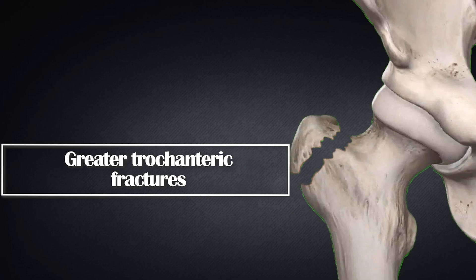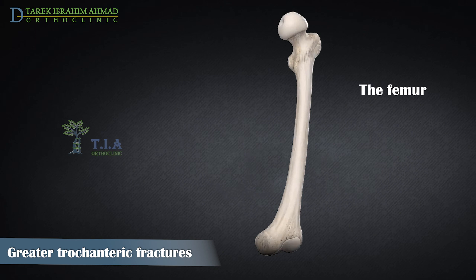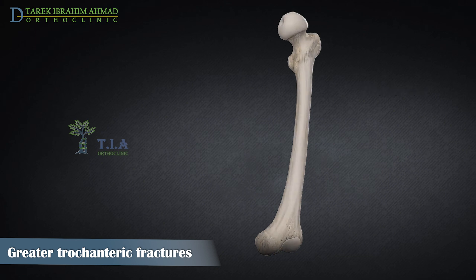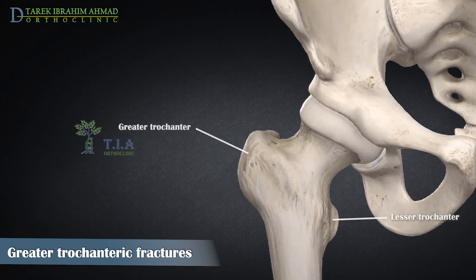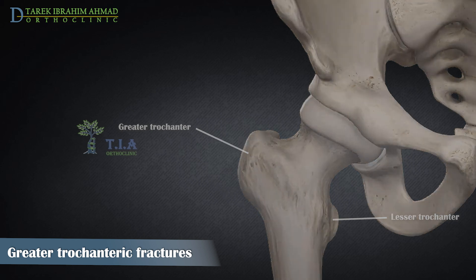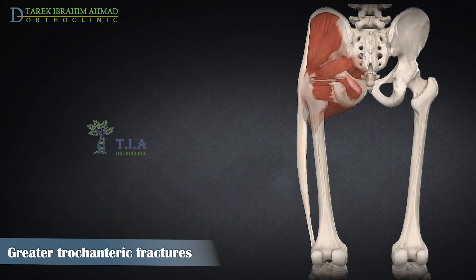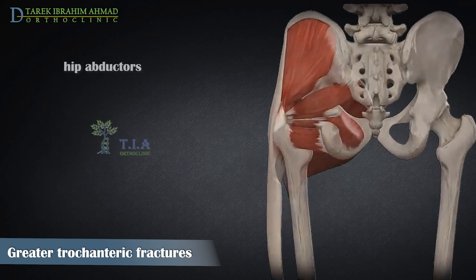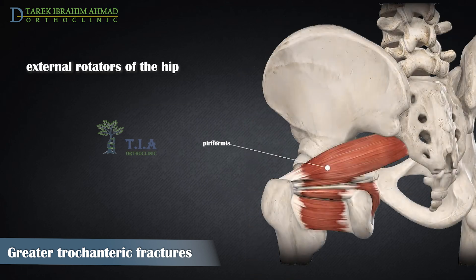Greater trochanteric fractures. The femur is the longest and strongest tubular bone in the human body and one of the principal load-bearing bones in the lower extremity. The thigh bone has two bony processes on the upper part: the greater and lesser trochanters. The greater trochanter is a bony prominence on the lateral aspect of the proximal femur, serving as the site for multiple muscle insertions, including the hip abductors, gluteus medius and minimus, and external rotators — piriformis, obturators.